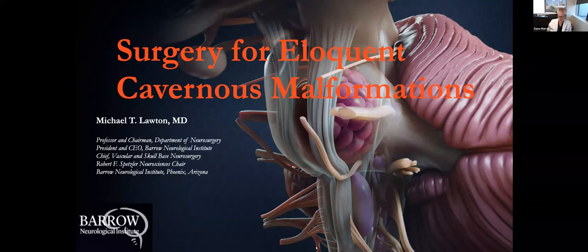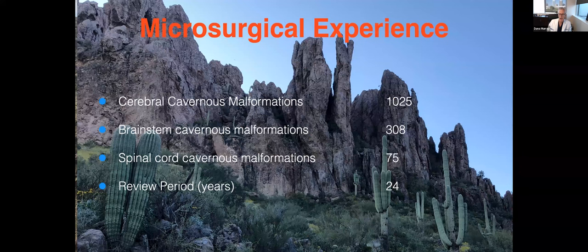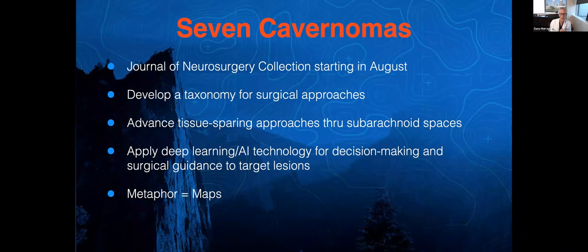So I'll talk a little bit about the surgery. I have done over a thousand of these. I've done over 300 in the brainstem and I'll be close to 100 now, spinal cord cavernous malformations. I've been reviewing a lot of my experience for the Journal of Neurosurgery. We're putting together this collection, what I call the seven cavernomas collection. It started in August, and we've been running now. I think six articles already in print now and a whole bunch more on the way.